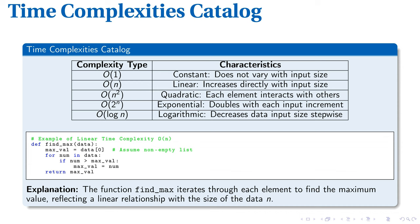For instance, a function exhibiting linear time complexity O(N) is one like FindMaxData in Python. This function iteratively checks each element of a list and retains the maximum identified value. The time complexity becomes linear, as it must review each element to identify the maximum, thus correlating directly with the size of the input.